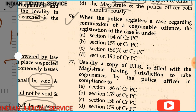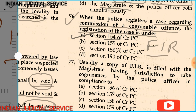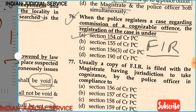Question 76: When the police officer registers a case regarding the commission of a cognizable offence, the registration is under section 154, 155, 156 subsection 3, or section 190 CRPC. The answer is section 154. Section 154 provides the provision of FIR — First Information Report. There is no definition of FIR in the section, only the provision stating that where a cognizable offence has occurred, the person must provide the first information to the nearest police station. This is known as FIR. Answer is option A.